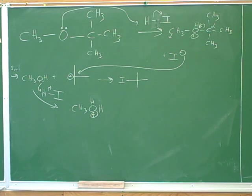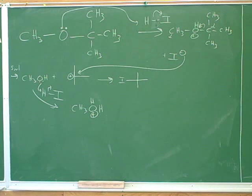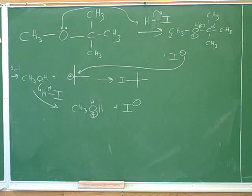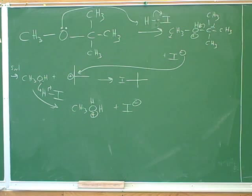We know this intermediate is not happy. Before we get back to that, let's get the electron-pushing arrows right for that protonation step. That gives us this. Now we have to decide if there's another step — and yes, there is. We can do an SN2 reaction. How do you know it's SN2 and not SN1? Because we're on a methyl carbon now — there's no steric hindrance at all. So even though the first reaction was SN1, this one makes sense as SN2.